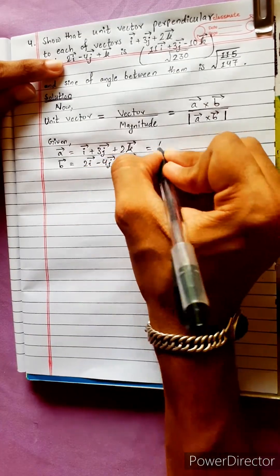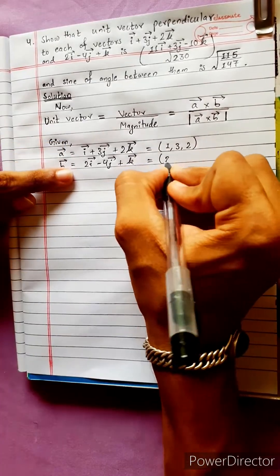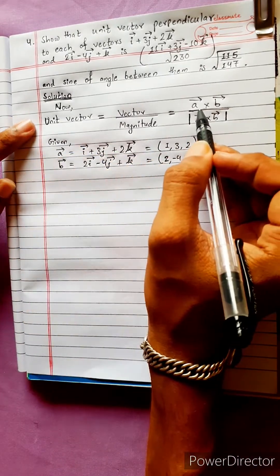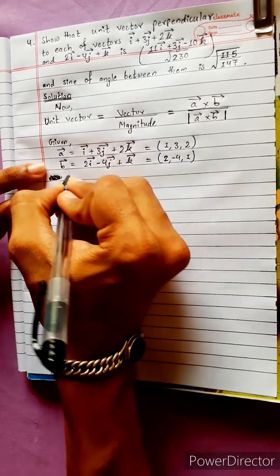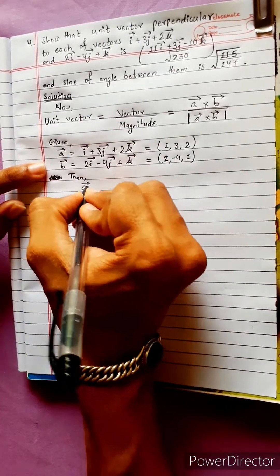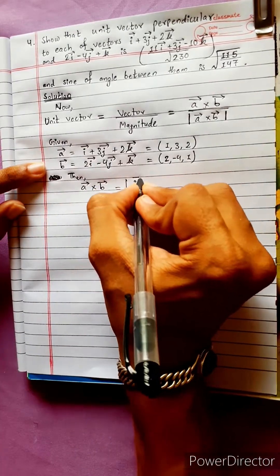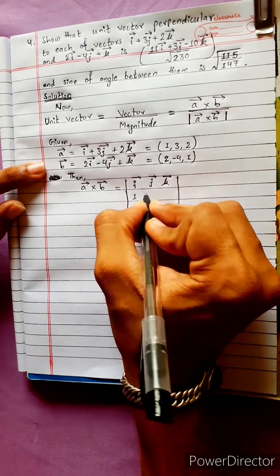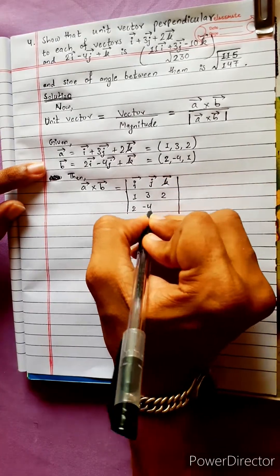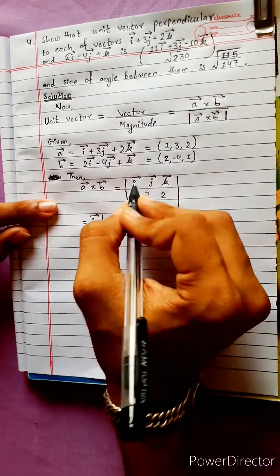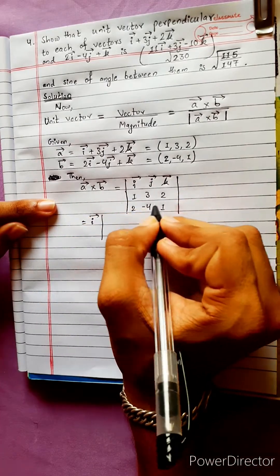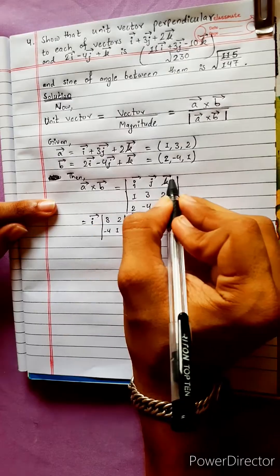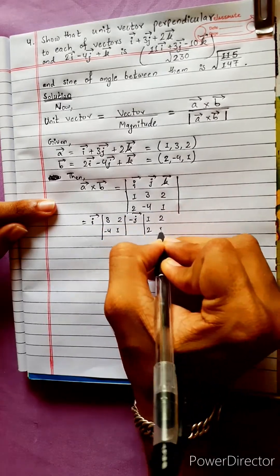Now, setting up the determinant: unit vector with components 1, 3, 2. We write the determinant with i, j, k in the first row.